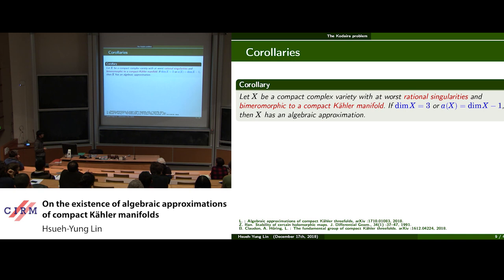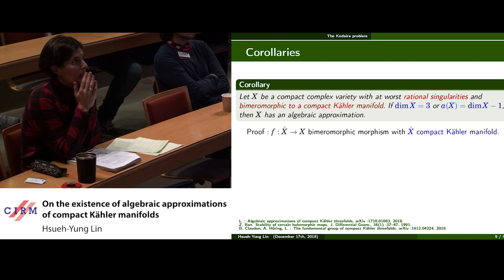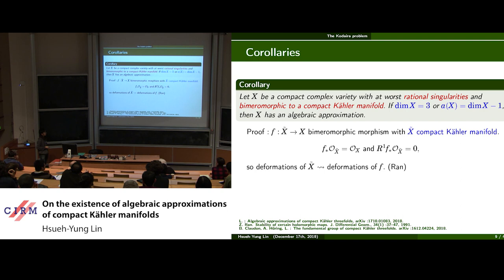This follows almost immediately from the main results. Let F be a bimeromorphic morphism from a compact Kähler manifold X-tilde to X. Since X has at worst rational singularities, the higher direct images of the structure sheaf vanish, and the pushforward of the structure sheaf is still the structure sheaf. Then according to a result of Ran, deformations of X-tilde will induce a deformation of F, so in particular an algebraic approximation of X-tilde implies an algebraic approximation of X.